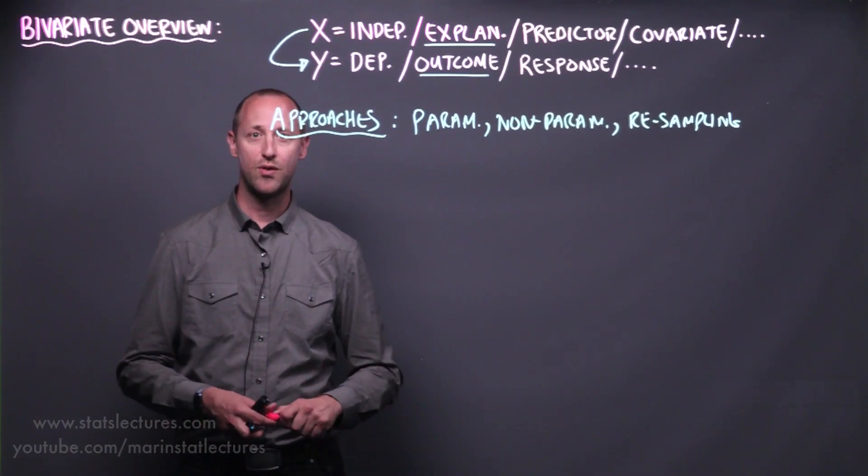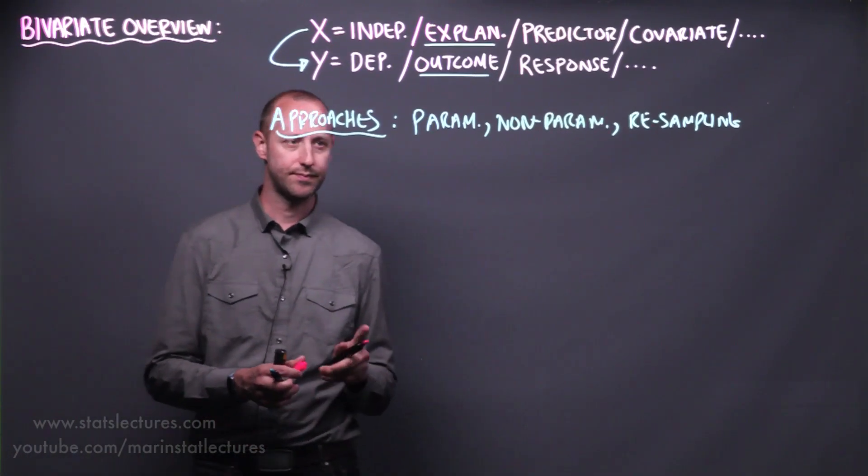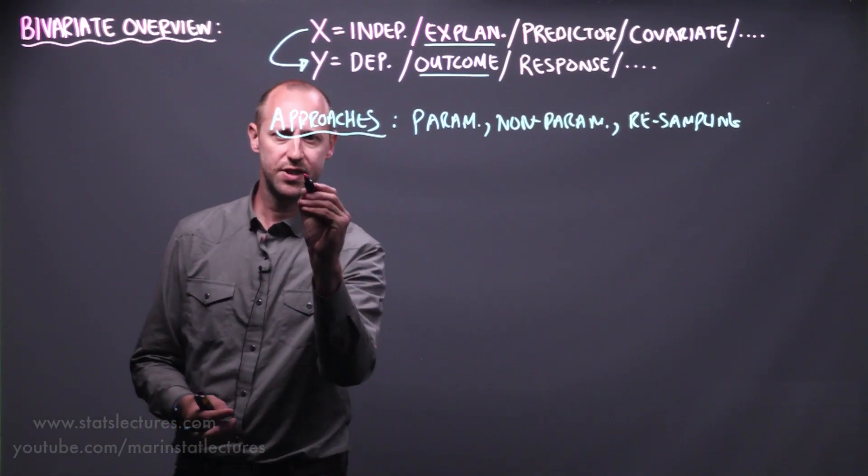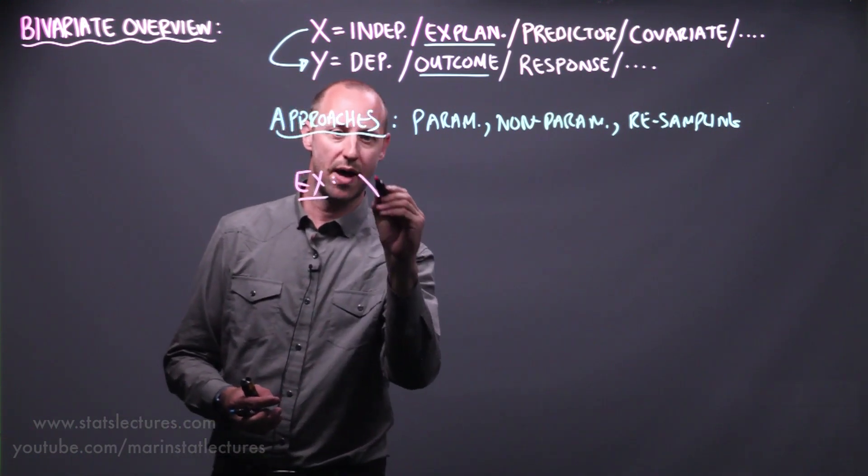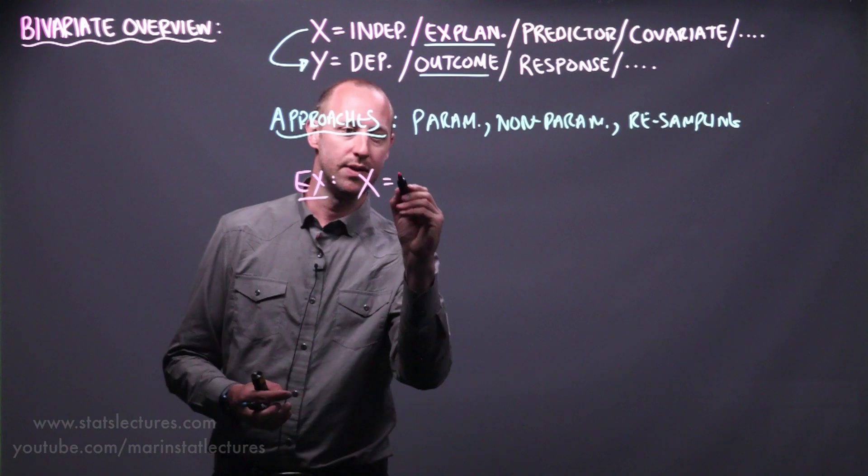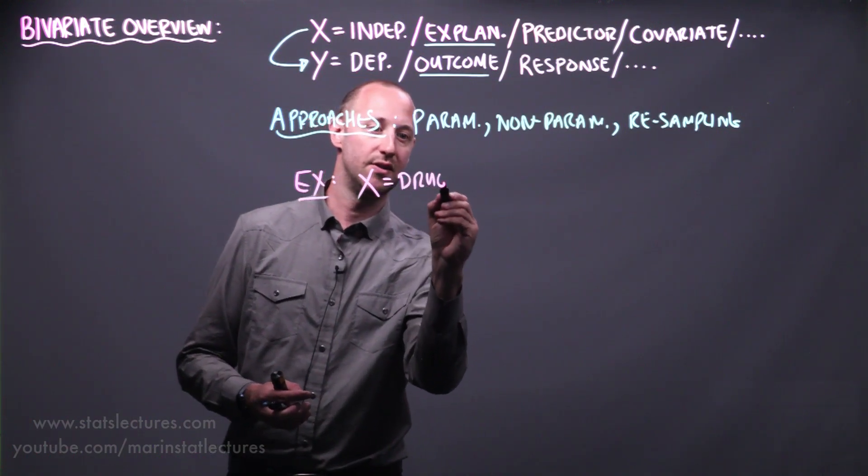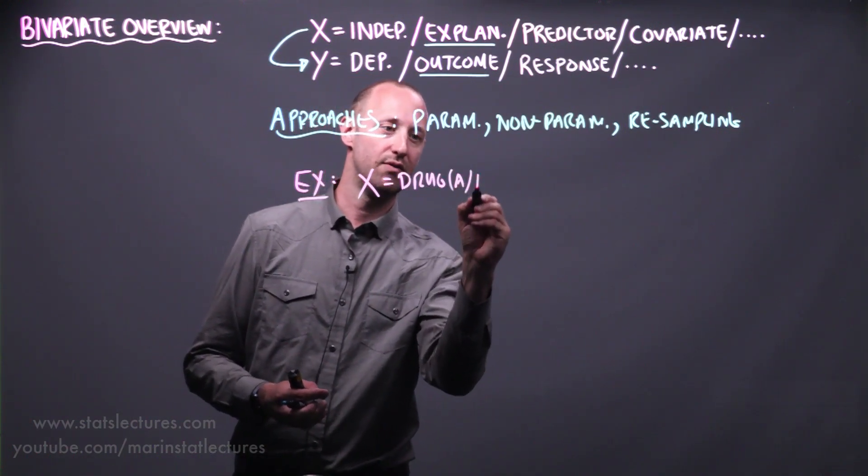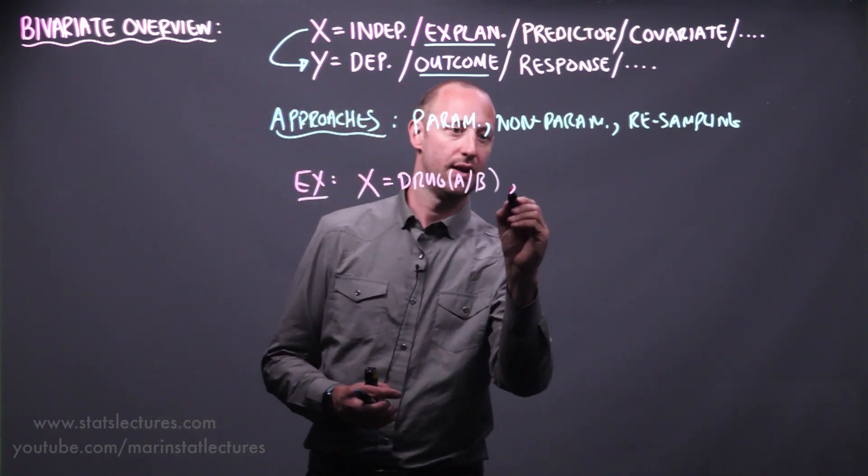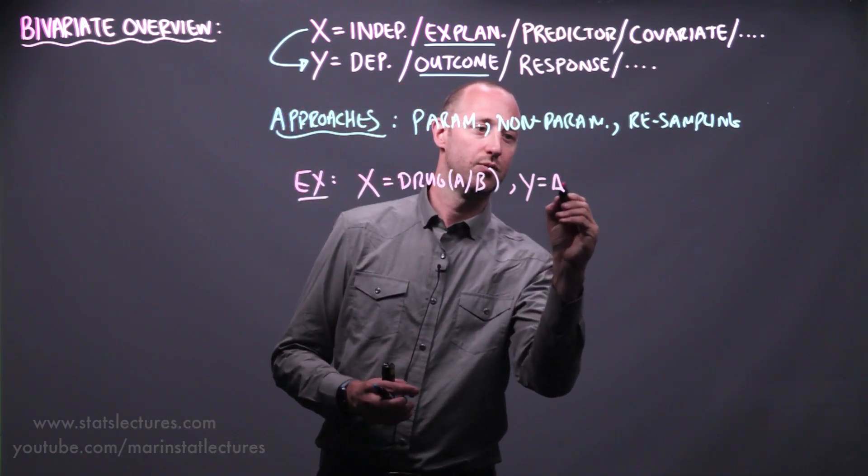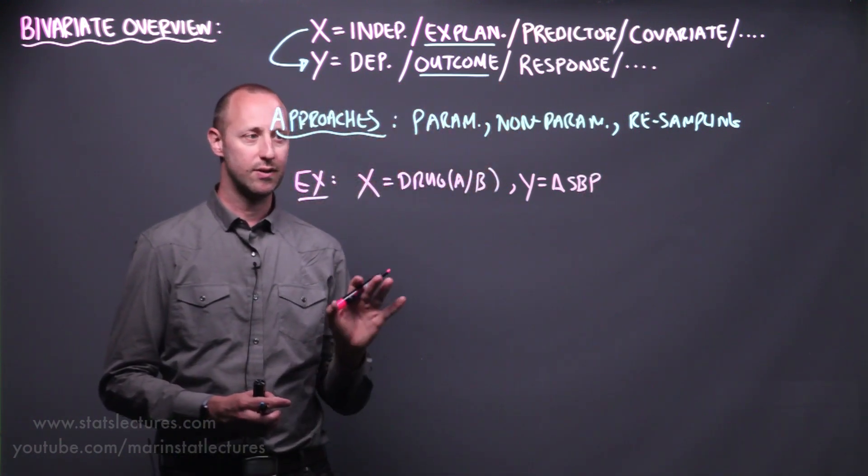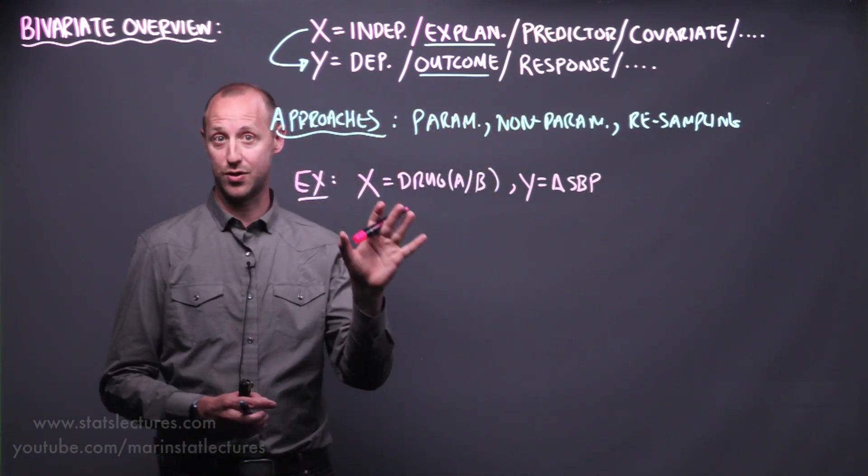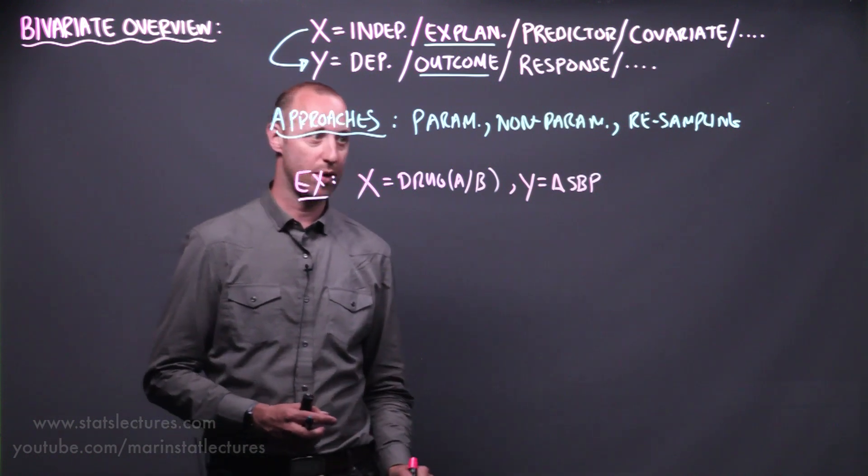So let's talk our way through a few examples. Let's consider a first example where we've got some x or explanatory variable, say what drug is an individual given, and they're given drug A or B, one of two treatments, and some outcome which is the change in systolic blood pressure. So here we'd like to look at the effect that a drug has on systolic blood pressure.